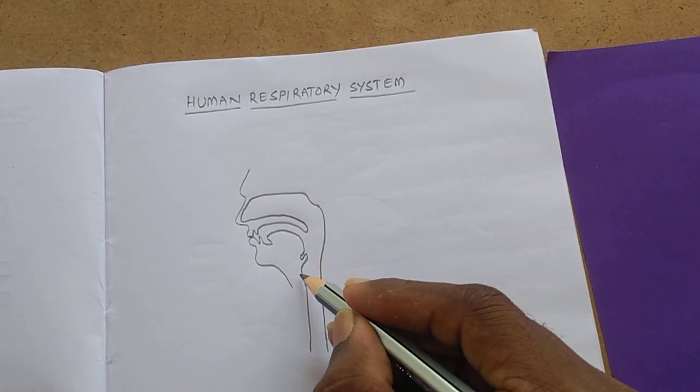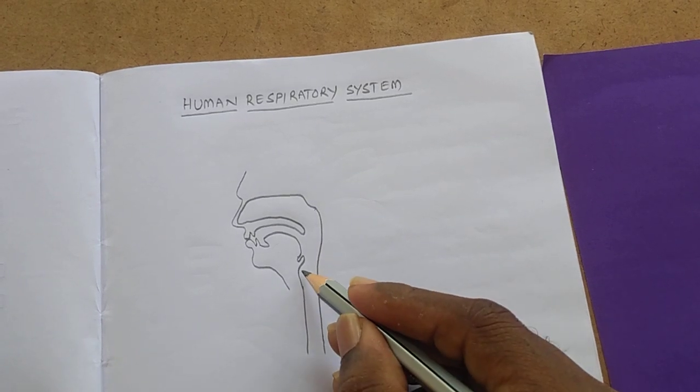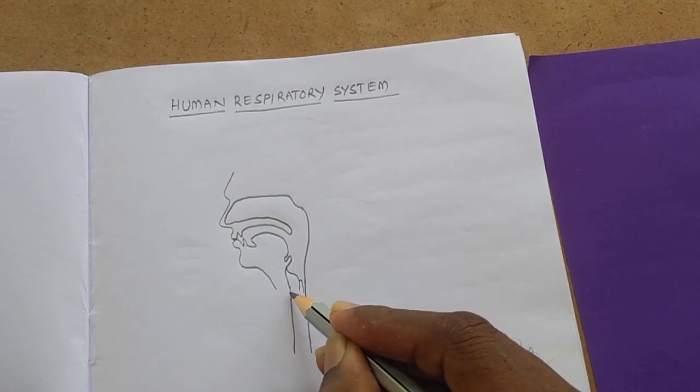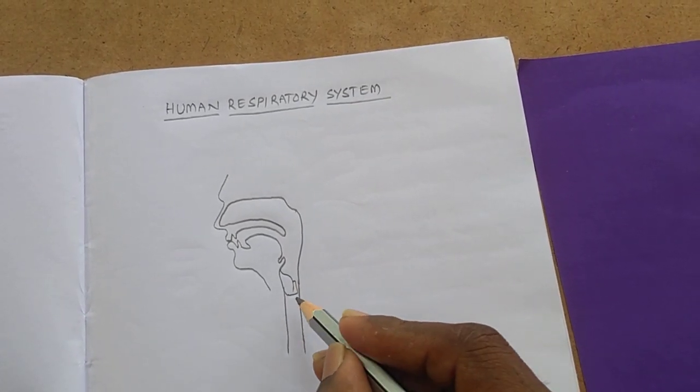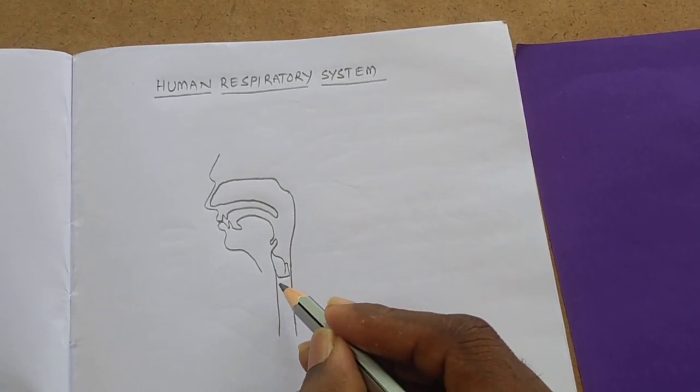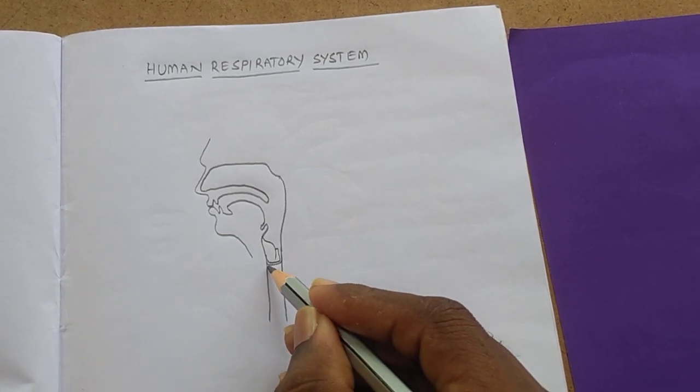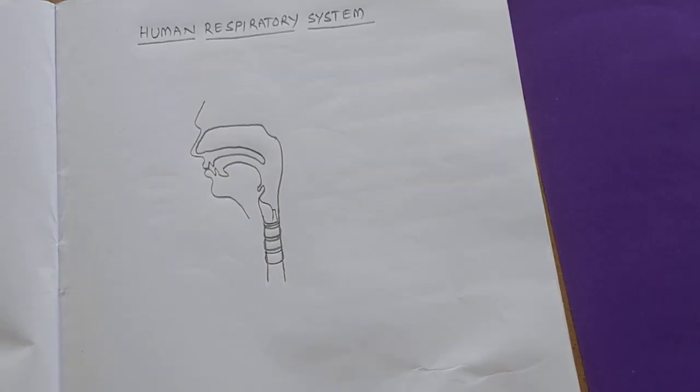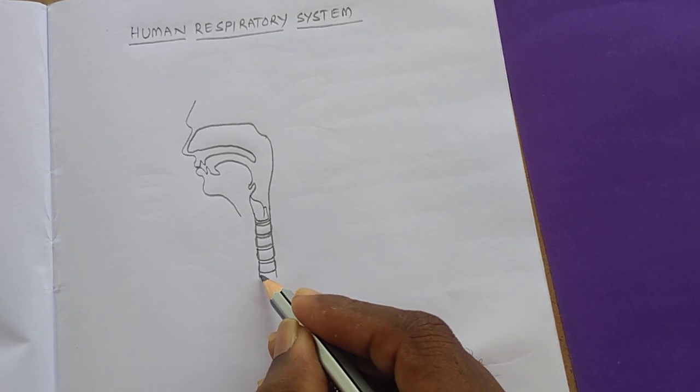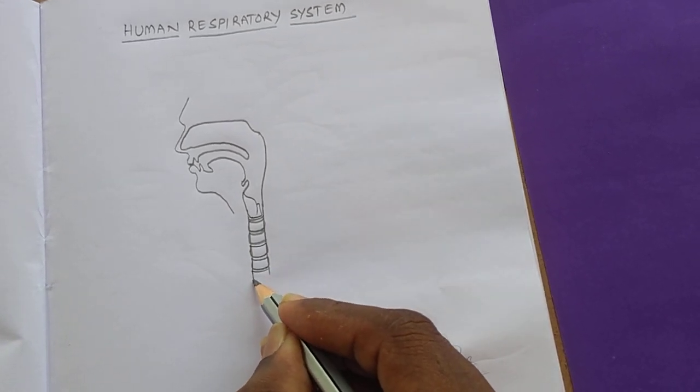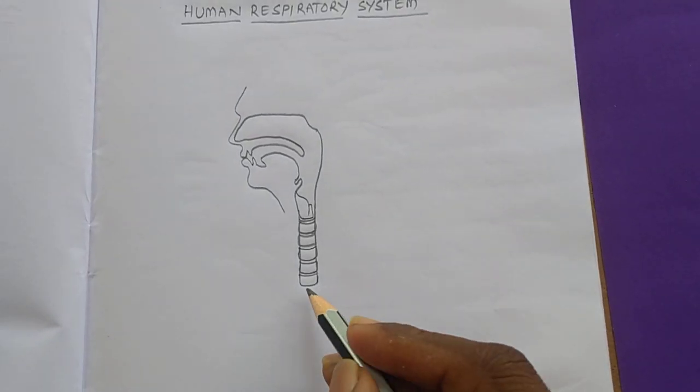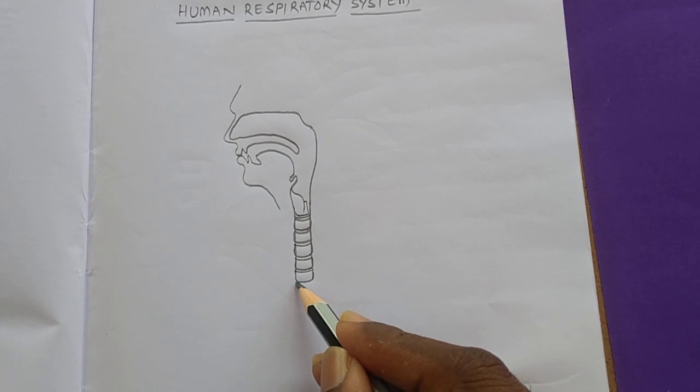And here, after that epiglottis, we have to draw the larynx. It is made up of cartilage. And from here we have to draw that c-shaped rings like this. And this trachea divides into...